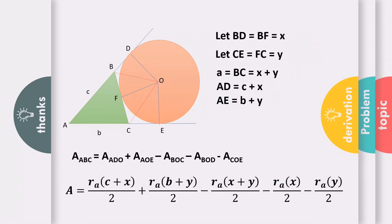On the other hand, triangle BOC: the radius is always perpendicular to the tangent line, so perpendicular to BC. So the base is BC, height is radius R_A. So it is R_A times (x + y) over 2. For BOD, the base is BD, which is x. Height is R_A. So R_A times x over 2. And for COE, the base is CE, which is y. The height is R_A. So the formula becomes R_A(y) / 2.